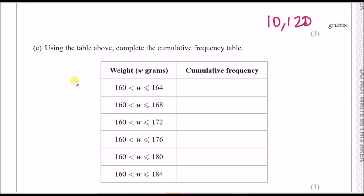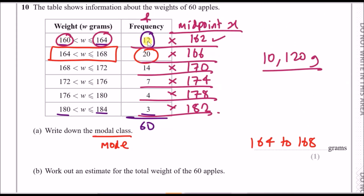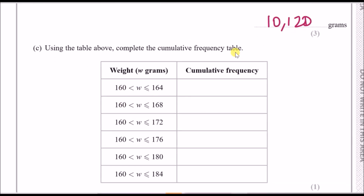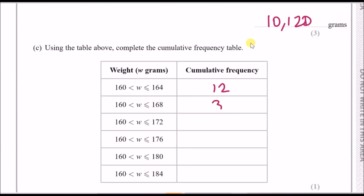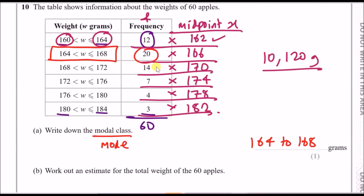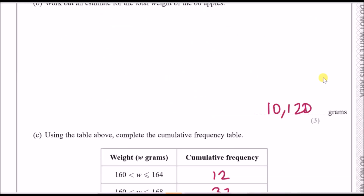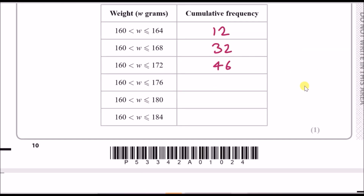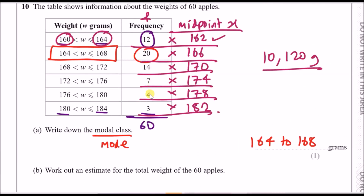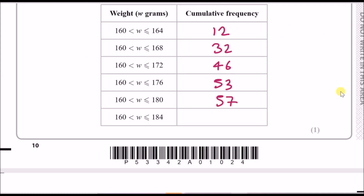For part c, complete the cumulative frequency table. Cumulative frequency means add and go. The first class stays at 12. The next group widens to 160–168, so you add 12 + 20 = 32. Keep adding each frequency: this gives 32, then 53, 57, and finally 60 — so by the end all 60 apples are accounted for.